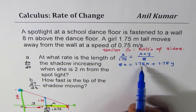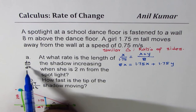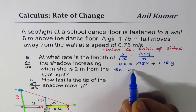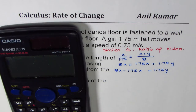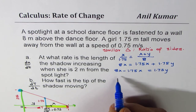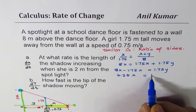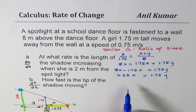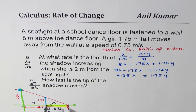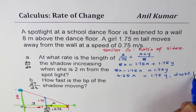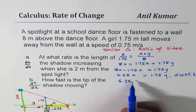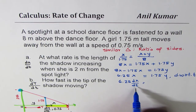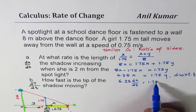Bringing 1.75X to the left: 8X minus 1.75X equals 1.75Y. That is 6.25X equals 1.75Y. Since we need to find the rate of change of X with respect to time, we differentiate implicitly with respect to time, giving us 6.25 dx/dt equals 1.75 dy/dt.